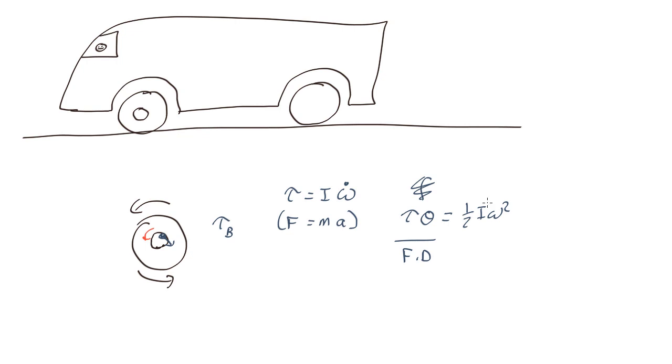So by either of those methods, you can work out how long or over how much rotation the wheel would stop in this case. So that's what happens if the wheel is spinning off the ground. How does putting the ground into the equation change things?